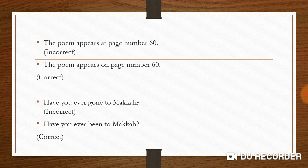Next: 'The poem appears at page number 60.' As previously discussed, when a reader is already on a page reading, we use 'on.' So the correct sentence is: 'The poem appears on page number 60.' If a student is being told to go to page 60, use 'at'; if they are already reading on page 60, use 'on.'